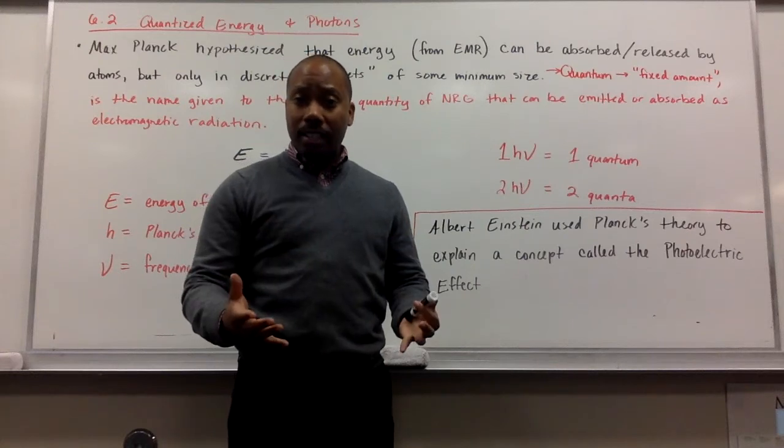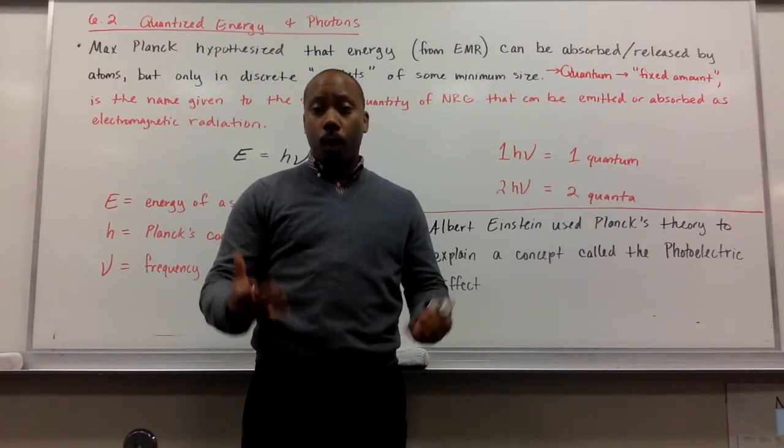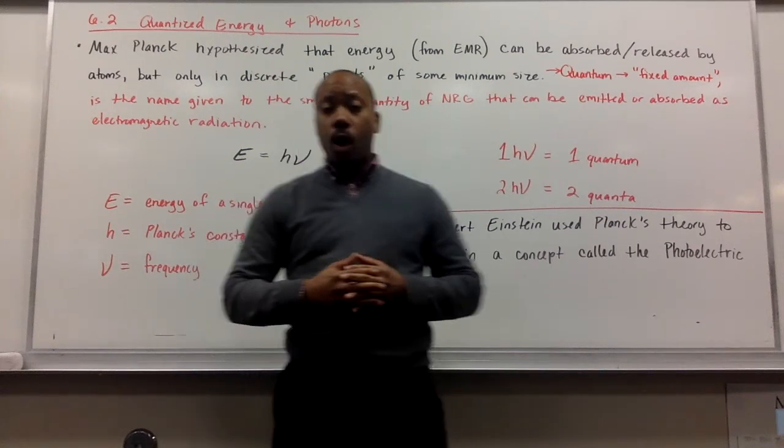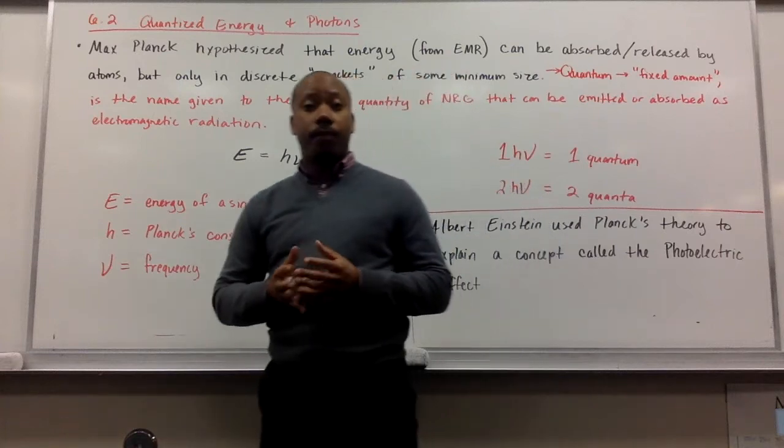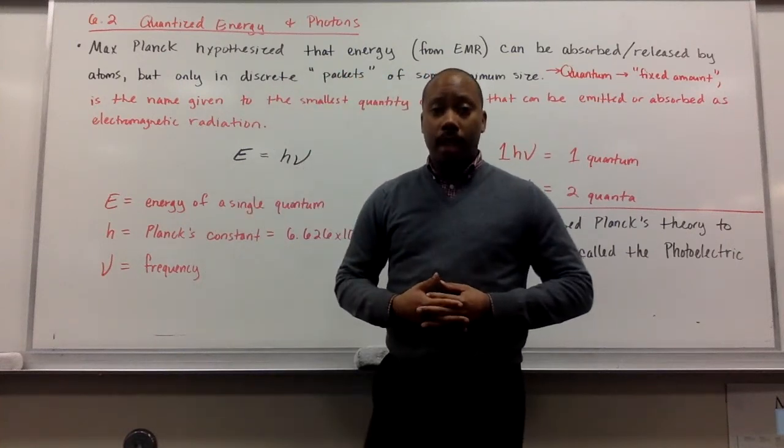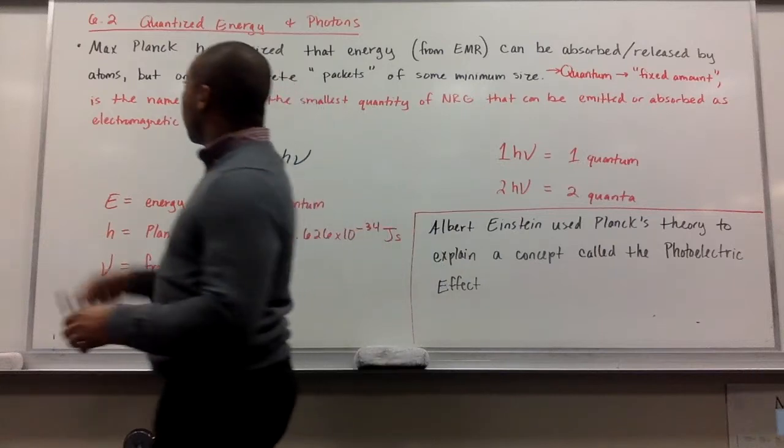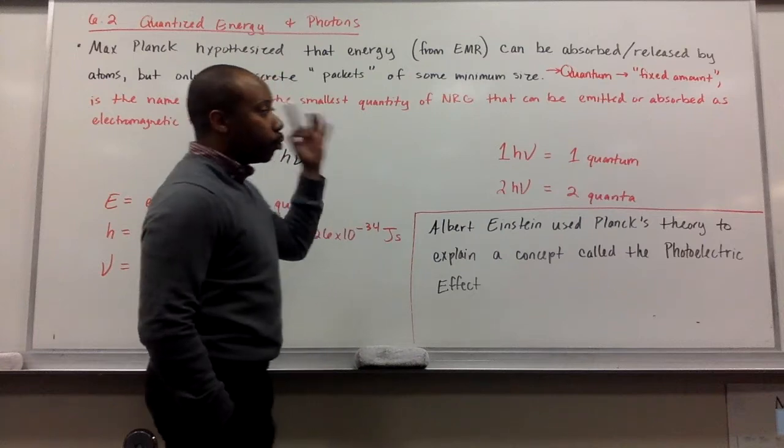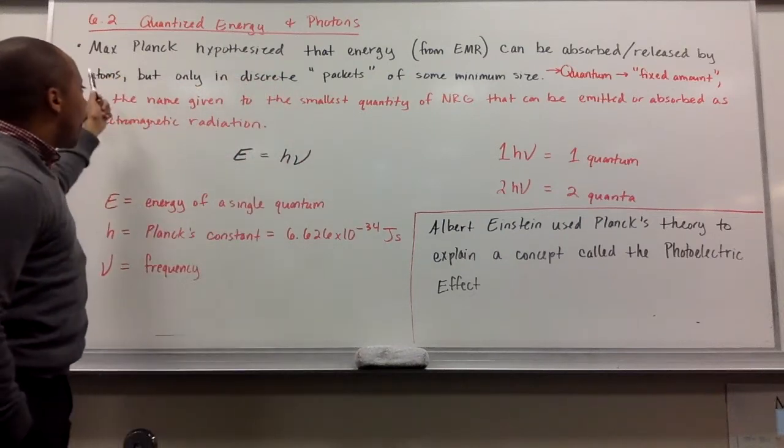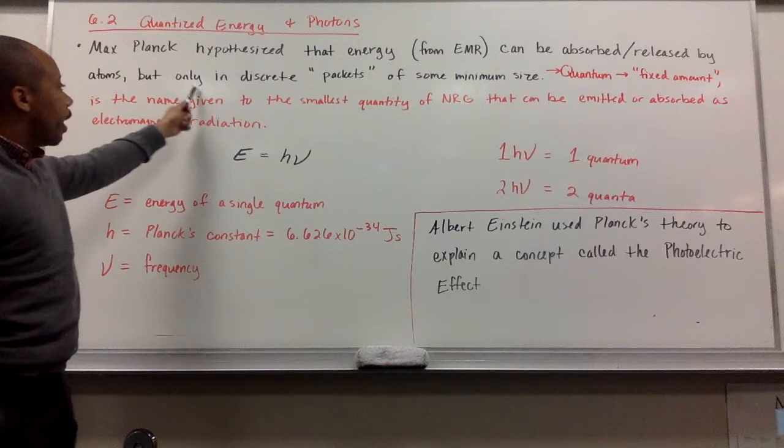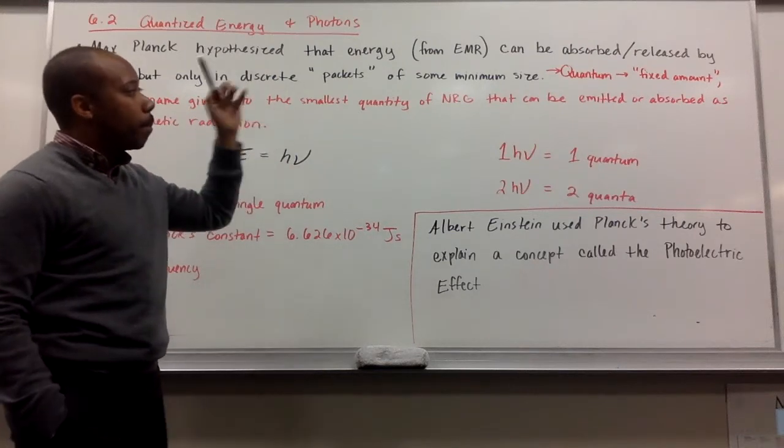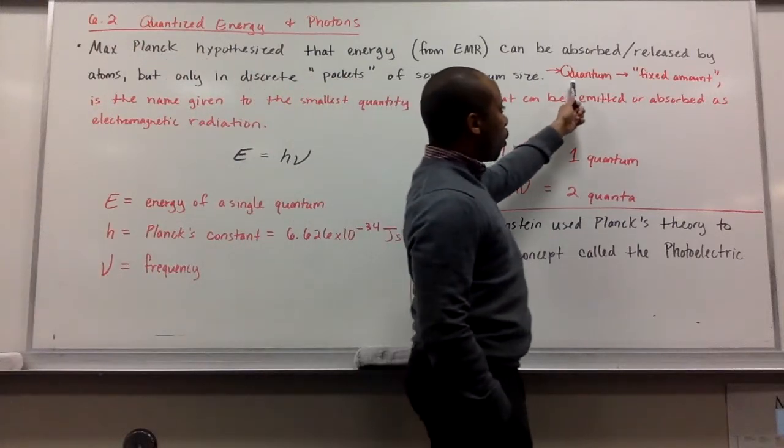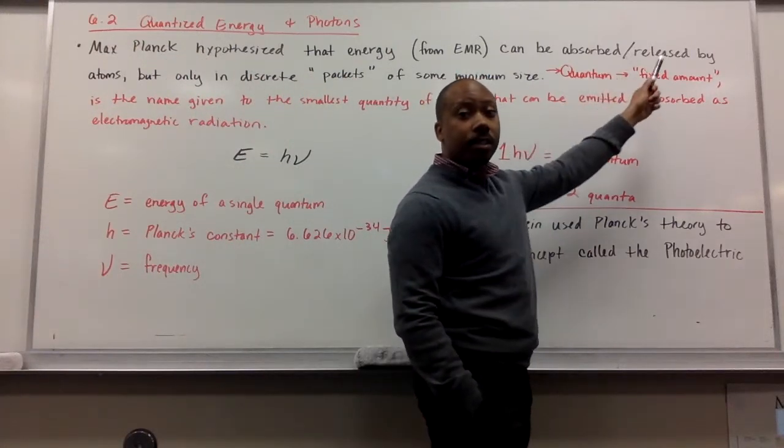Section 6.2 talks about quantized energy and photons. Max Planck hypothesized that energy from electromagnetic radiation can be absorbed and released by atoms, but only in discrete packets of some minimum size. That minimum size is what we get the word quantum from. Quantum means a fixed amount.